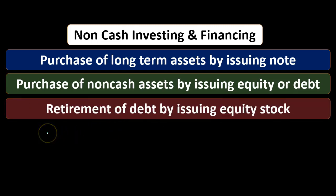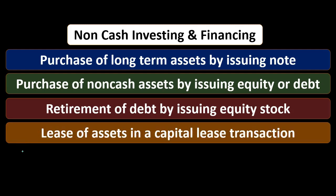If we have a retirement of debt by issuing equity stock, you can think of that the same way: we could have issued the stock, gotten cash, and used that cash to retire the debt. Instead, we just retired the debt with the stock. We also have the example of a leased asset in a capital lease transaction. A capital lease is structured as a lease, but in substance it's really a purchase that we financed — similar to the purchase of long-term assets by issuing a note.